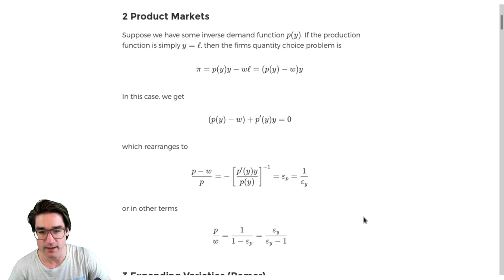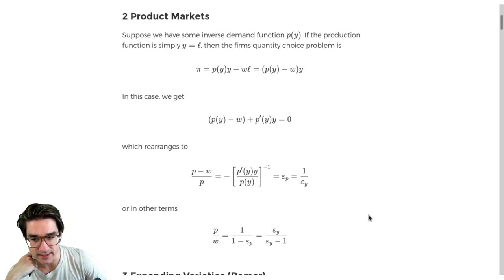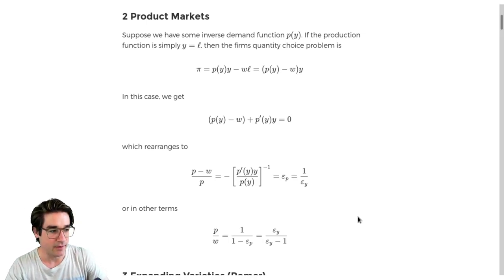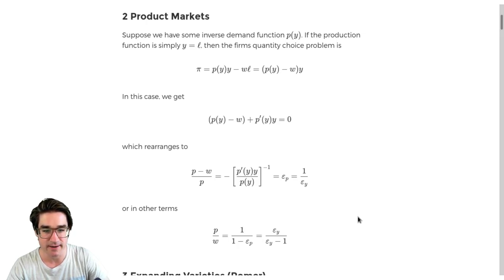That constant markup result is useful because we get constant elasticities a lot in our demand functions. The markup over cost essentially gives you profit, and profit is what we're interested in — how much are these firms making, how much do they value a new product line, and hence how much will they invest in generating new product lines, which is the driver of growth in this setting.